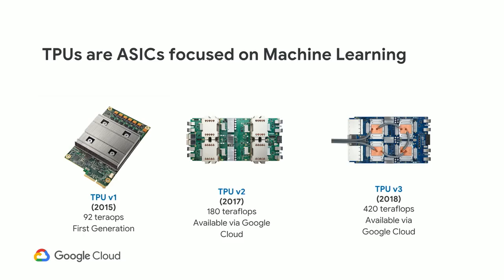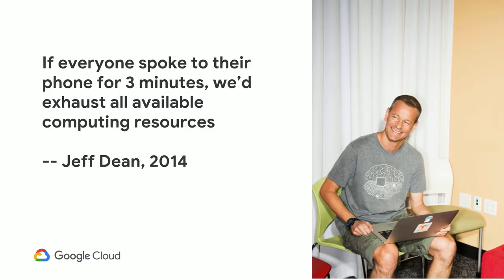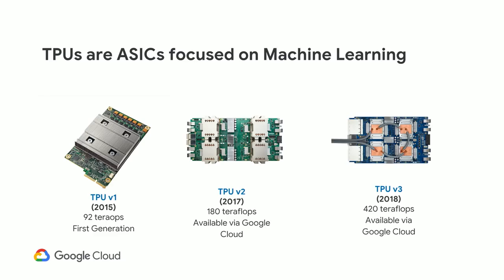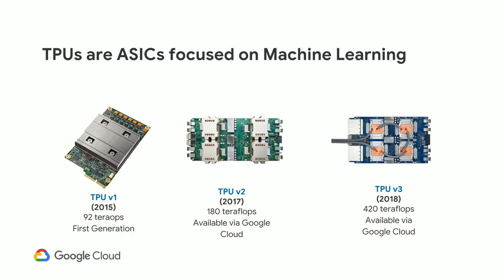In 2015, a year after Jeff Dean's calculation, we came out with TPU version one. His calculation was about inference — if everyone speaks into their phone — so TPU version one was about inference, making sure our trained models could handle the load of all our users. Version two onwards does both training and inference. Version three is currently in alpha.